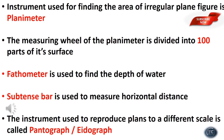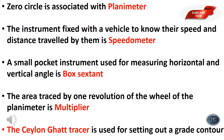The zero circle is associated with the planimeter. The instrument fixed with the vehicle to know the speed and distance traveled by it is the speedometer. A small pocket instrument used for measuring horizontal and vertical angles is the box sextant.